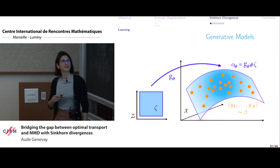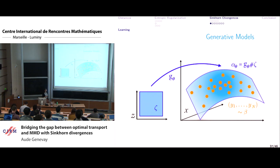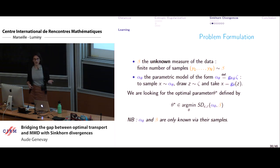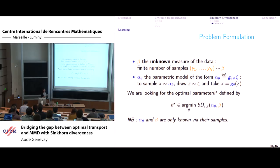Generative models are probabilistic models where you have a lower-dimensional distribution zeta — for instance, a uniform distribution in a low-dimensional space — and push it forward through a function g-zeta to a high-dimensional space (the space of your data), giving a model distribution alpha-zeta. You want to learn the parameters that minimize the distance between the model measure alpha-zeta and the data measure beta. Generative models are easy to sample from: just sample from your latent distribution zeta and apply the push-forward function g-zeta.